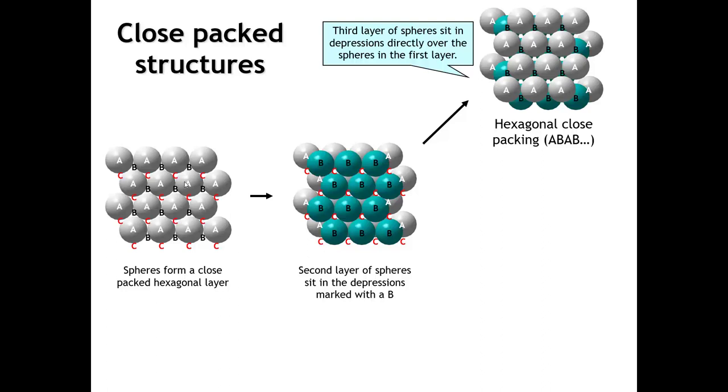If we put the third layer immediately over the first layer, that has a kind of symmetry where every second layer we repeat. So the repeat pattern is layer A, layer B, layer A, layer B, layer A, layer B, AB, AB, AB. And we call this hexagonal close packing.